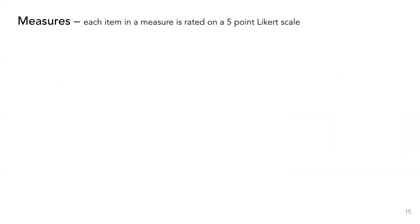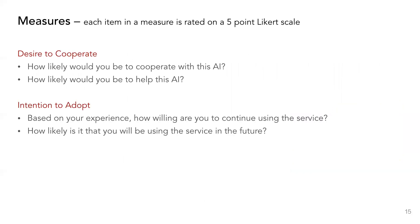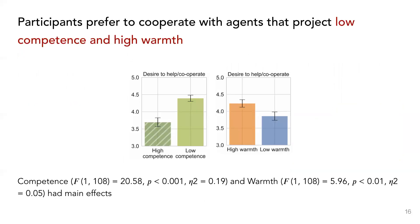After completing the task with the system, participants were probed for their desire to cooperate with the system and for their intention to adopt the system. We find that participants expressed a stronger desire to cooperate with agents that projected lower competence and agents that projected higher warmth.